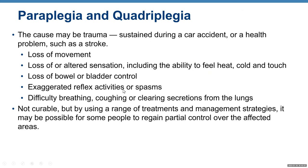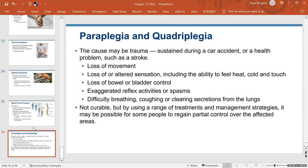A bit more about paraplegia and quadriplegia: the cause may be trauma from a car accident or a health problem such as a stroke. Symptoms include loss of movement, loss of or altered sensation including the ability to feel heat, cold, and touch, loss of bowel or bladder control, exaggerated reflex activities or spasms, and difficulty breathing, coughing, or clearing secretions from the lungs. These conditions are not curable, but through a range of treatments and management strategies, it may be possible for some people to regain partial control over the affected areas.